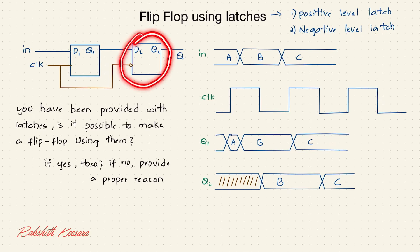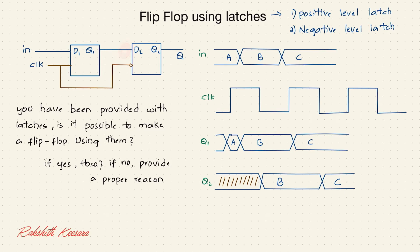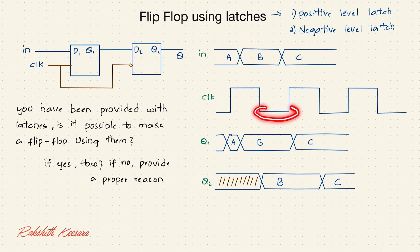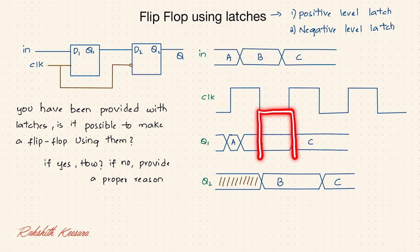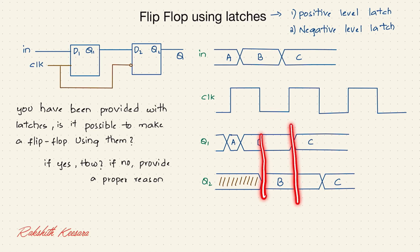The second latch is negative level-sensitive, so whenever it sees a negative level, whatever data is present at input D2 — which is nothing but Q1 — will propagate to Q2. So whenever the level is negative, whatever data is at Q1 will go to Q. Here the level is negative and the data at Q1 is D, so Q2 will also see D, and it continues until the next negative level.